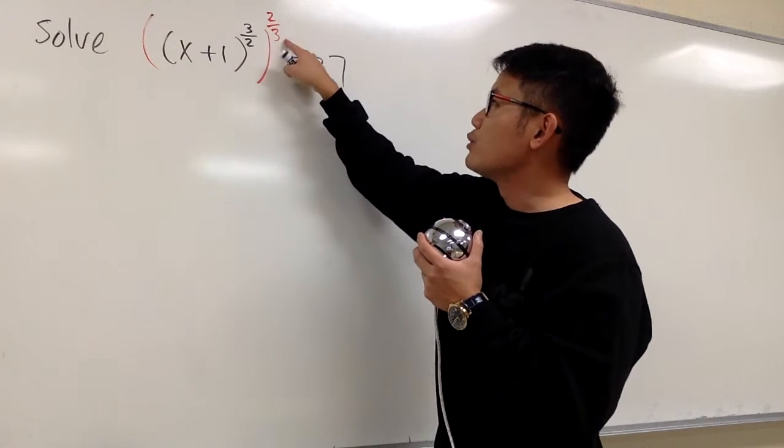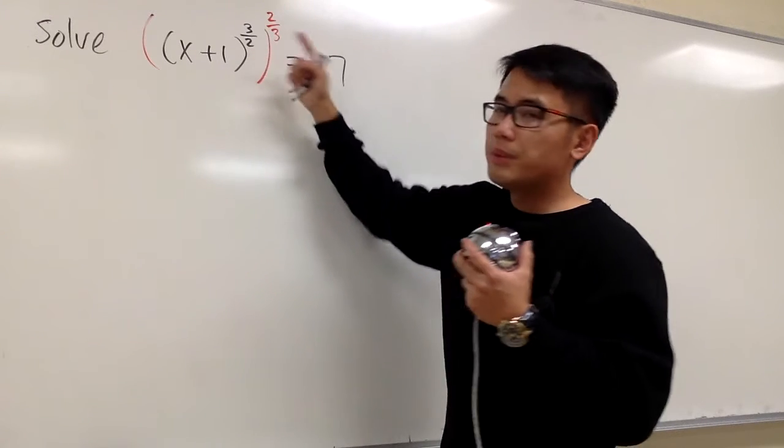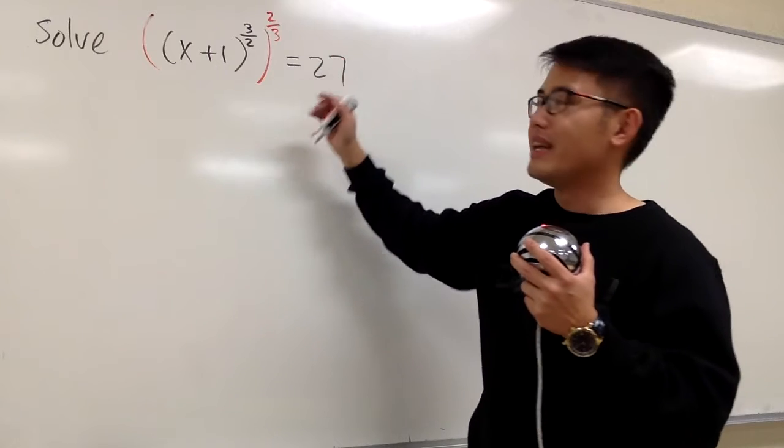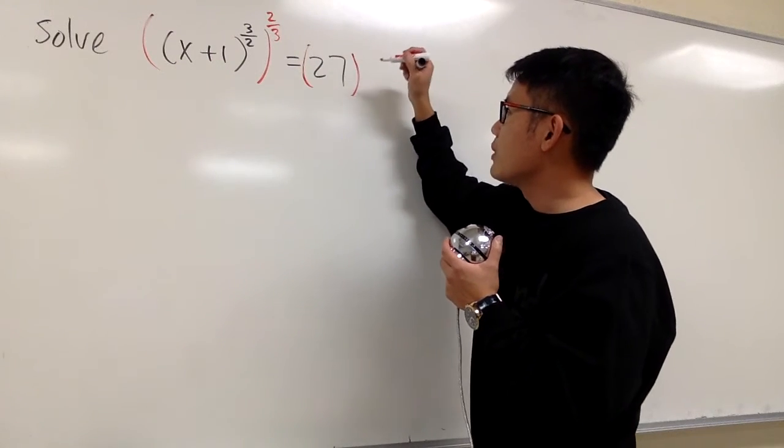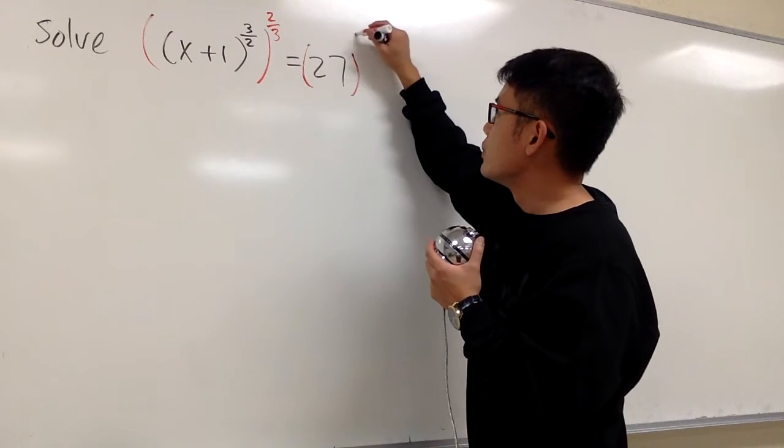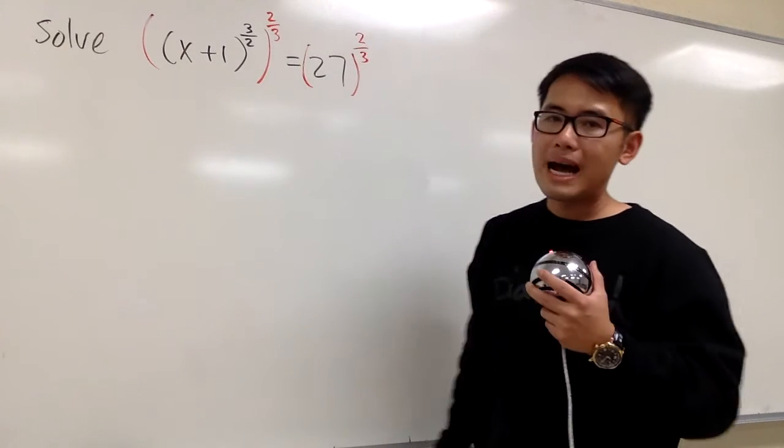And you see, this 3 and that will be cancelled, and this 2 and that 2 will be cancelled. That's really good. And be sure we just need to do the same thing on the right-hand side as well. Raise this to the 2 over 3 power.